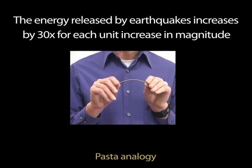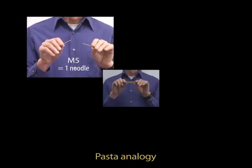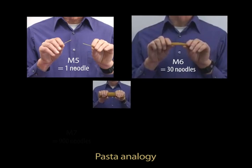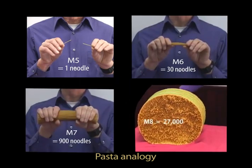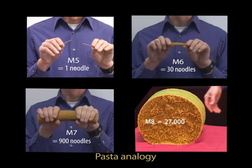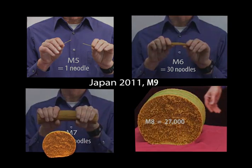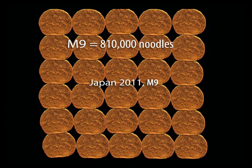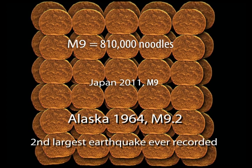As an analogy, if breaking a single strand of pasta represents a magnitude 5 earthquake, then we need to break 30 strands to represent a 6, 900 strands for a 7, and 27,000 noodles to represent a magnitude 8. To represent the energy released in a magnitude 9 earthquake, like the recent earthquake in Japan, we would need to break an immense bundle of 810,000 noodles. And the Alaska 1964 earthquake was even larger at magnitude 9.2.